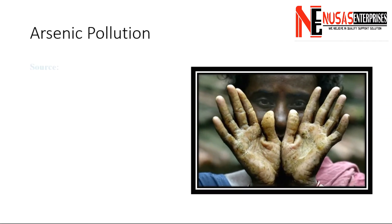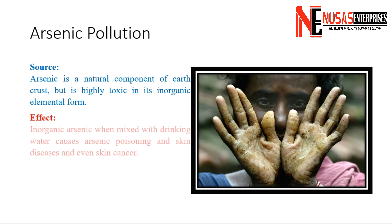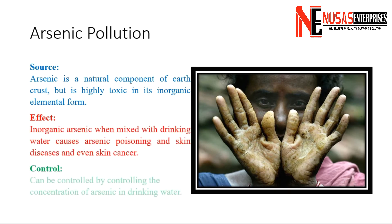Arsenic pollution: arsenic is a natural component of the earth's crust but is highly toxic in its inorganic elemental form. It can be controlled by controlling the concentration of arsenic in drinking water.